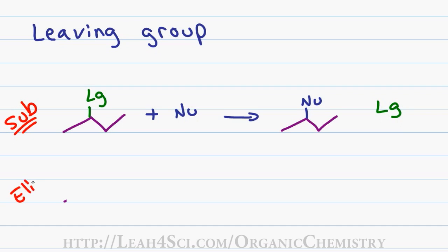In an elimination reaction, your carbon containing the leaving group is going to react with a base but instead of the base replacing the leaving group, your leaving group as well as your beta hydrogen will be gone and there will be a pi bond where those two atoms used to be.